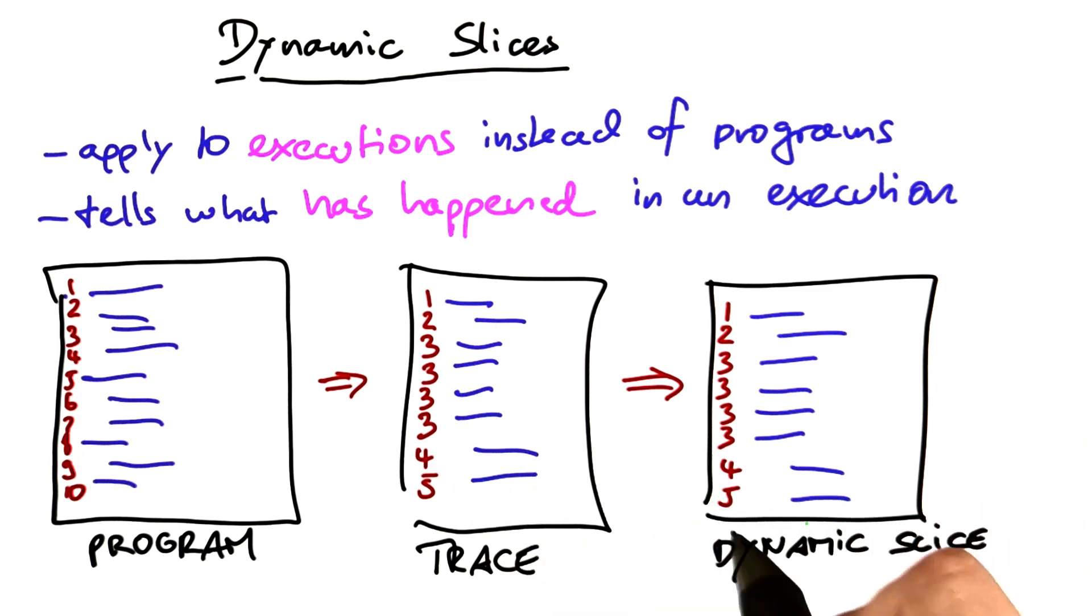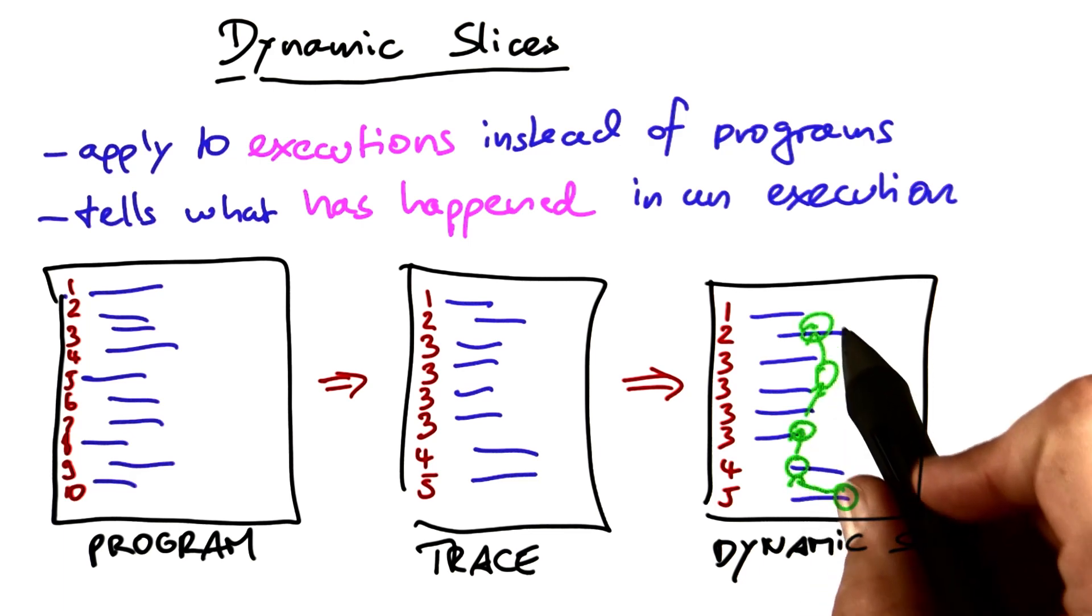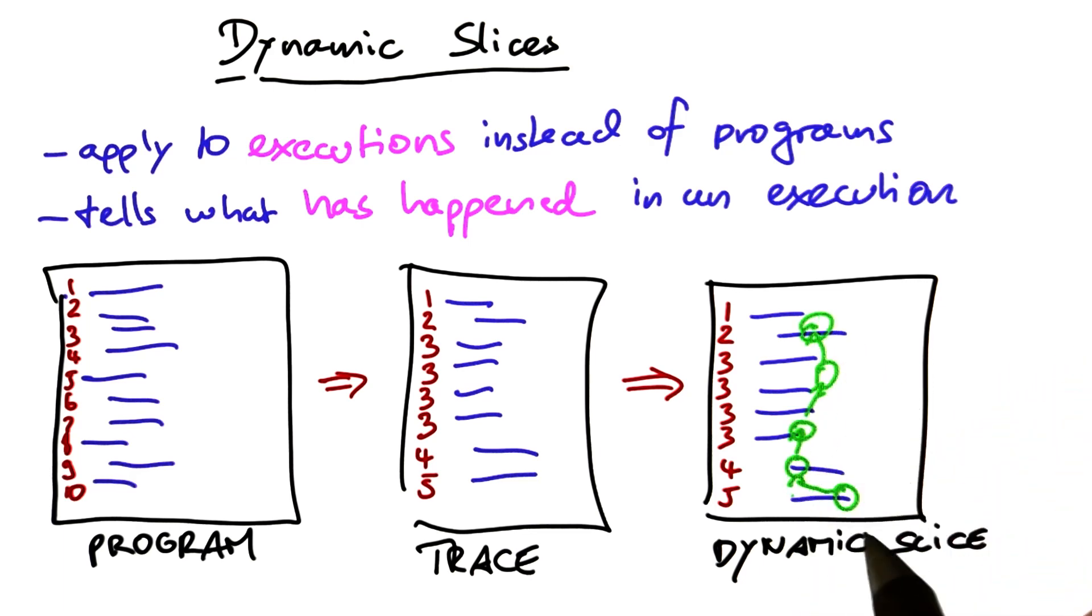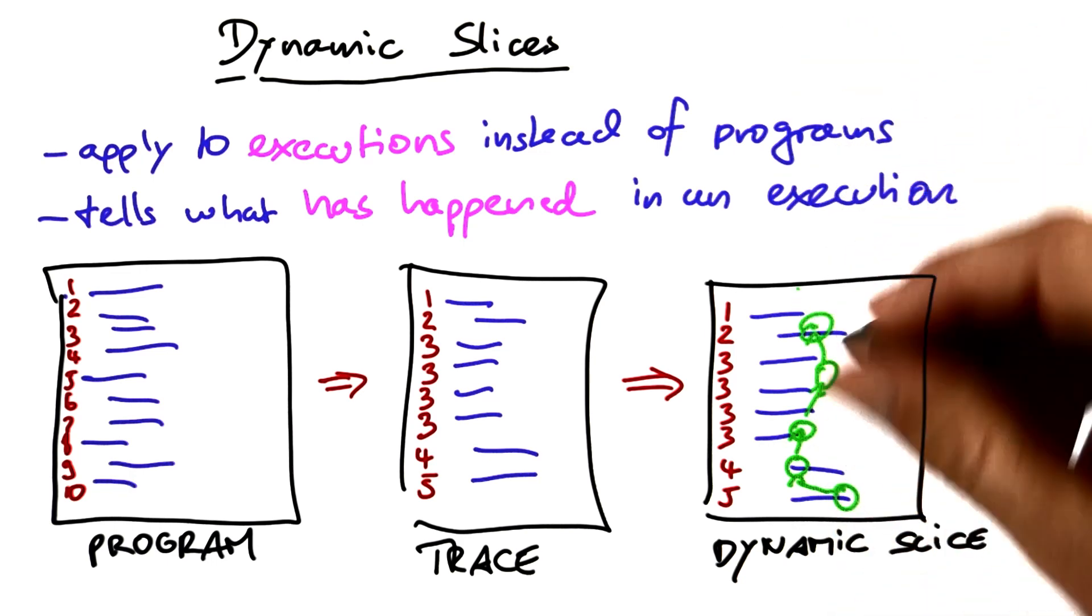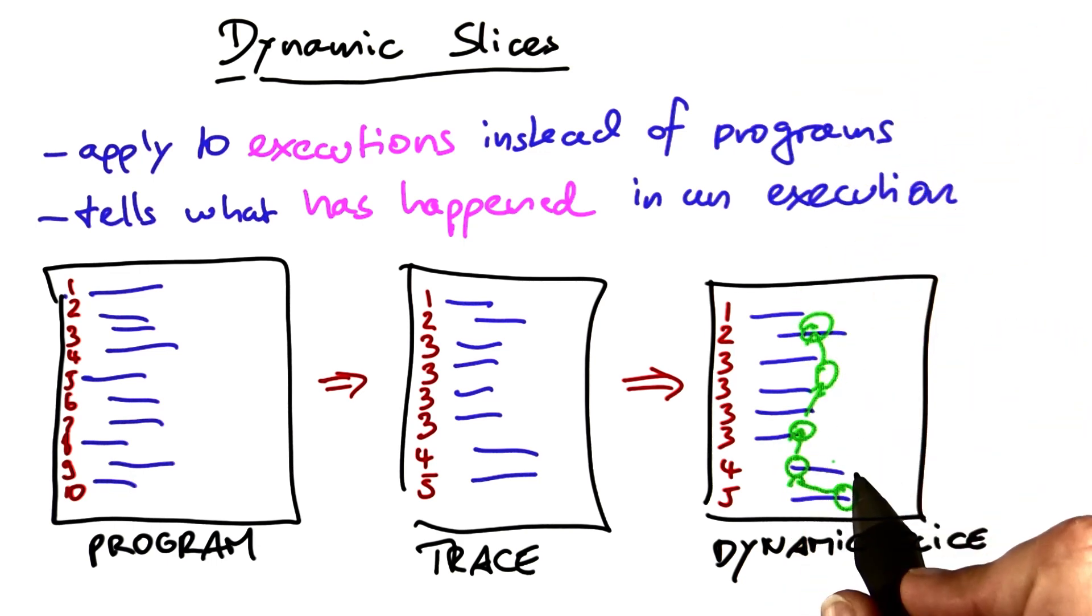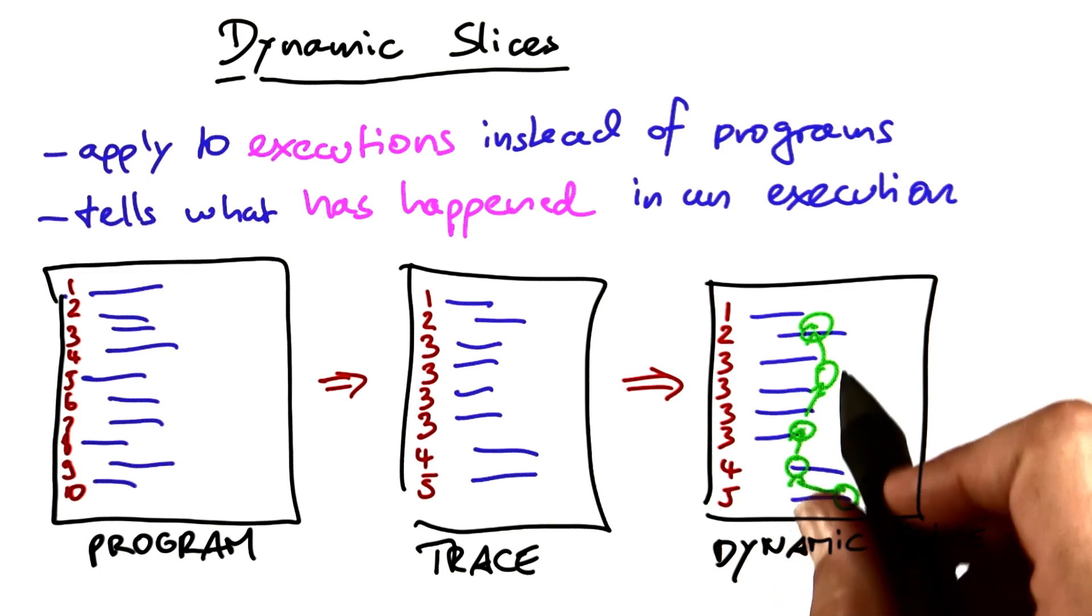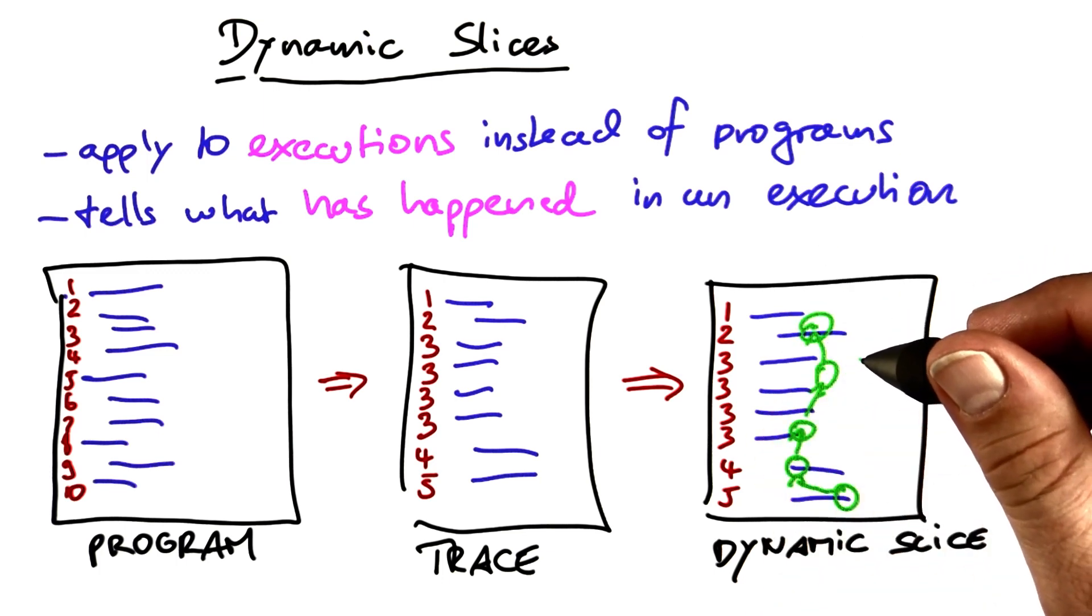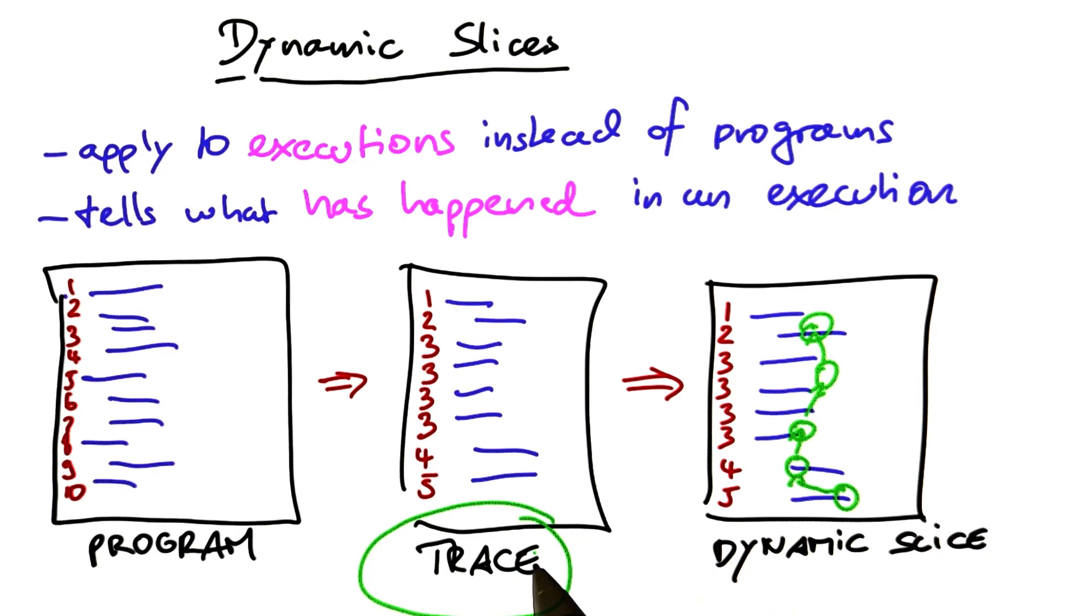And if we find, say, that at the bottom of the trace some variable is wrong, we can now trace back the dependencies in the execution and again use this as a base for debugging when following back the cause-effect chain through the program.